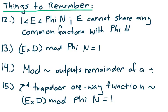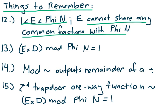We're also going to be adding some new things to this list that we covered in the last video. Some other stuff that you have to remember is this inequality that we use to find e. e must be greater than one but less than phi(n), and e cannot share any common factors with the value of phi(n). You also have to remember the equation that we use to find d: the quantity e times d, mod phi(n), has to equal one.